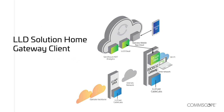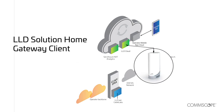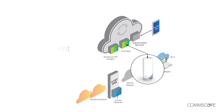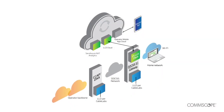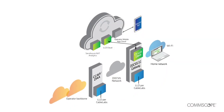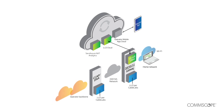CommScope's LLD solution starts in the home gateway client, which creates an LLD fast lane as specified by the CableLabs standard, and also monitors incoming traffic and selects which will be put into the fast lane. In addition, the client collects latency data and sends it to the cloud for analytics. This software is available today for CommScope's DOCSIS 3.1 gateways.